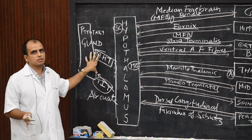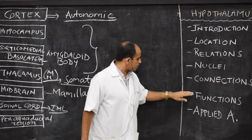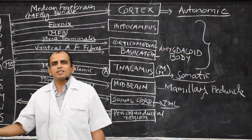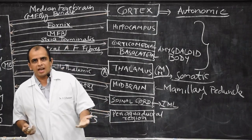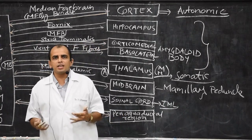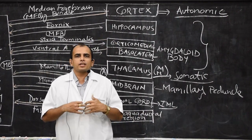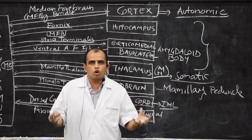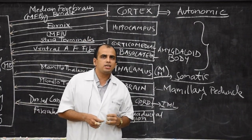So that covers the introduction, location, relations, nuclei, and connections of the hypothalamus. Regarding functions: the anterior nucleus regulates the parasympathetic system, and the posterior nucleus regulates the sympathetic system. Various nuclei act as satiety and hunger centers — the ventromedial nucleus acts as a satiety center, while the lateral nucleus acts as a hunger center. Other nuclei regulate the sleep cycle and sexual drives. The arcuate nucleus secretes various releasing hormones influencing the pituitary gland, which then releases various hormones.